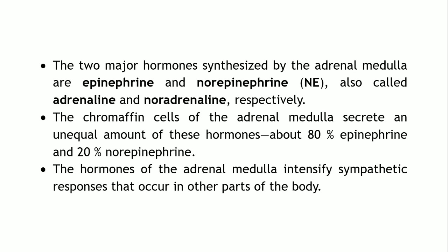The two major hormones produced by the adrenal medulla are epinephrine (also known as adrenaline) and norepinephrine (also known as noradrenaline). A very small amount of dopamine is also produced. Chromaffin cells produce 80% epinephrine and 20% norepinephrine. These hormones act as both neurotransmitters and hormones in the body.